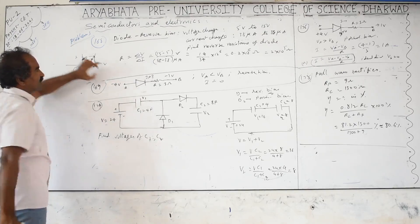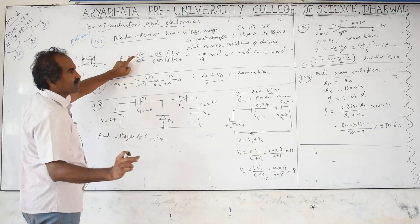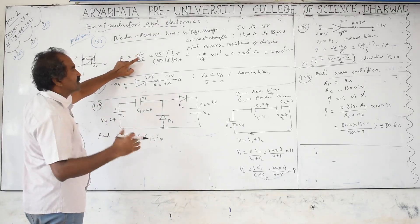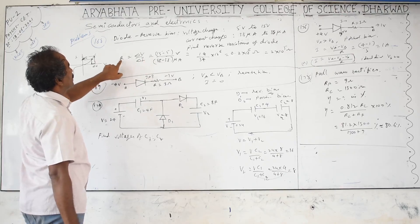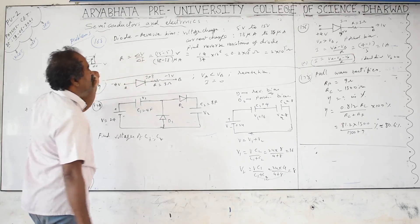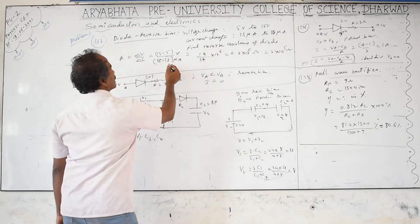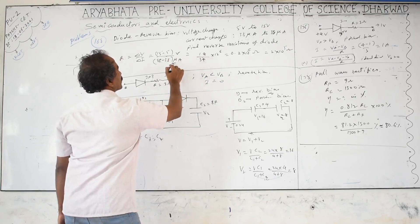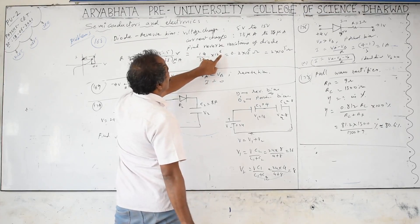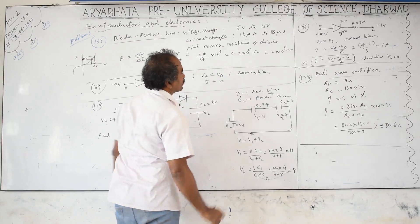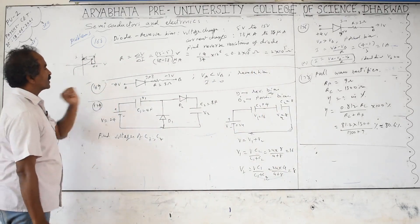r = ΔV/ΔI = 10 / (50 × 10⁻⁶) = 10 × 10⁶/50 = 0.2 × 10⁶ = 2 × 10⁵ Ω. This is the dynamic resistance in reverse bias. Note: ΔV/ΔI gives dynamic resistance (for changing/AC values), while V/I gives static resistance (for fixed/DC values).